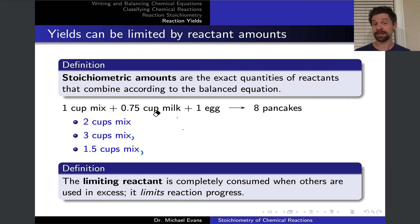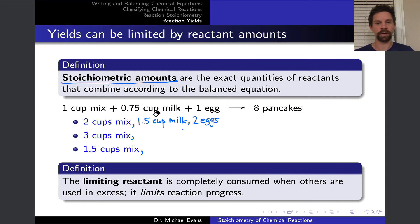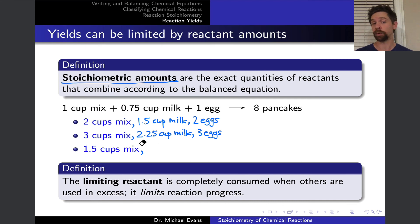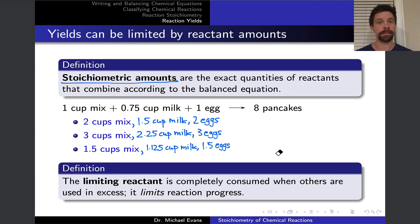If I've got two cups of mix, it's going to take twice the amount of milk to consume those two cups of mix — so 1.5 cups of milk and two eggs. The stoichiometric amount of eggs corresponding to two cups of mix is two eggs, and this entire mixture would give 16 pancakes. With three cups of mix, everything is multiplied by three, so the stoichiometric amounts of milk and eggs are 2.25 cups and three eggs. With 1.5 cups of mix, multiplying everything by 1.5 gives 1.125 cups of milk and 1.5 eggs.